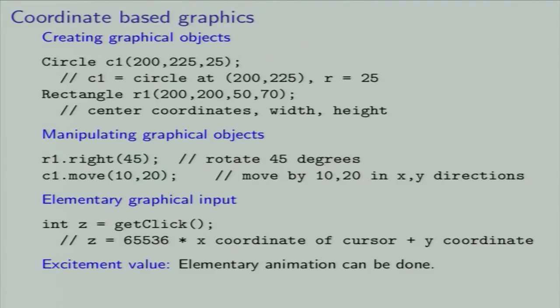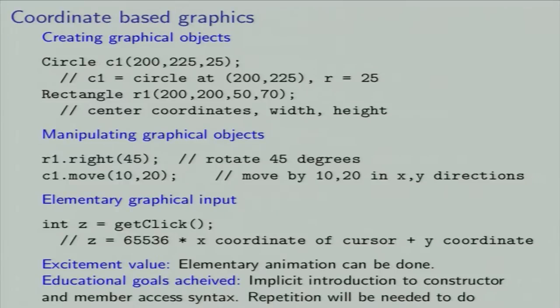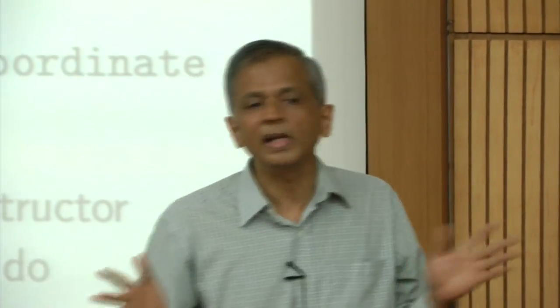At this point, reasonably interesting animations can be done — moving squares, circles, clicking to bring a circle somewhere. Implicitly, we have introduced the constructor and member syntax. Creating C1 with those coordinates is just a call to a constructor, but I am not going to tell students that on the first day. Similarly, the dot notation is just a member function call, but I won't tell them about objects. They are focusing entirely on drawing things, making rectangles, moving them around — but implicitly they are learning constructor syntax and dot notation.